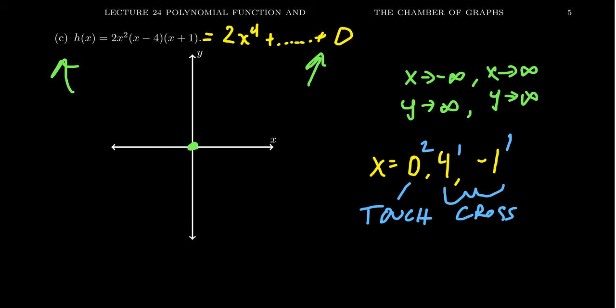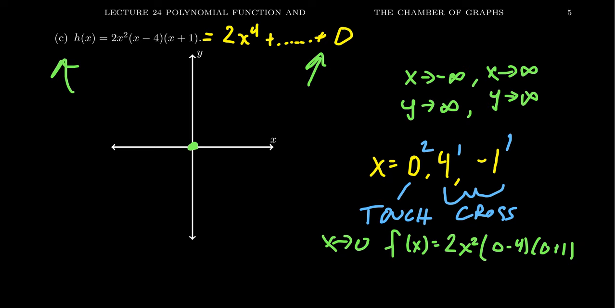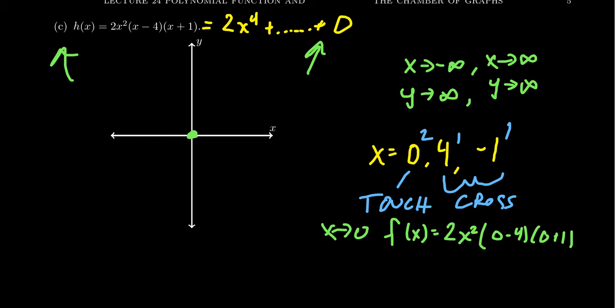When graphing, I often use the y-intercept as a starting point. Since we don't have a separate y-intercept, there are two options: you could pick a different point other than an x-intercept, like x equals 1, or you can investigate what happens as x gets close to 0. When x is close to 0, f of x will look like the function where you plug 0 in for all the x's except in the x squared. You get 2x squared times 0 minus 4 times 0 plus 1. I use this technique a lot when the function passes through the origin because plugging in x equals 0 is a very painless process.